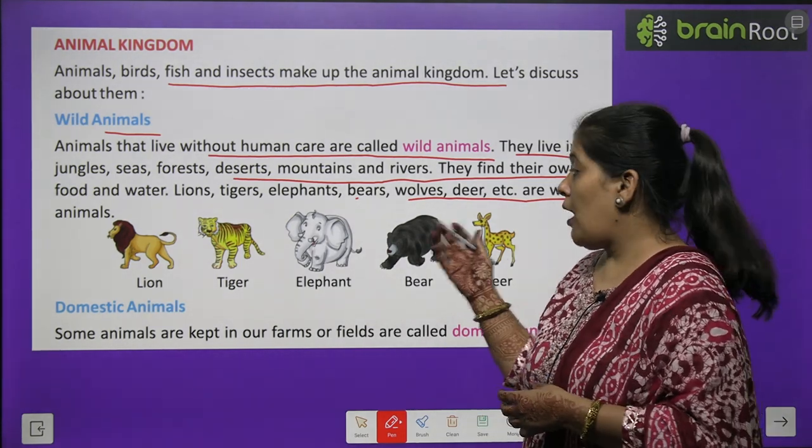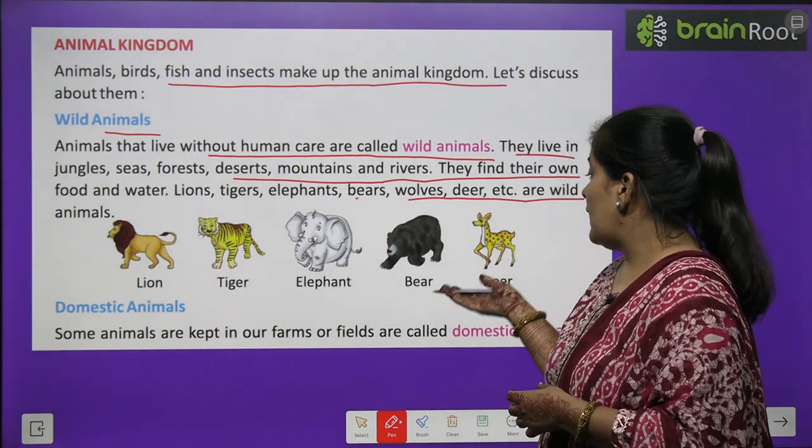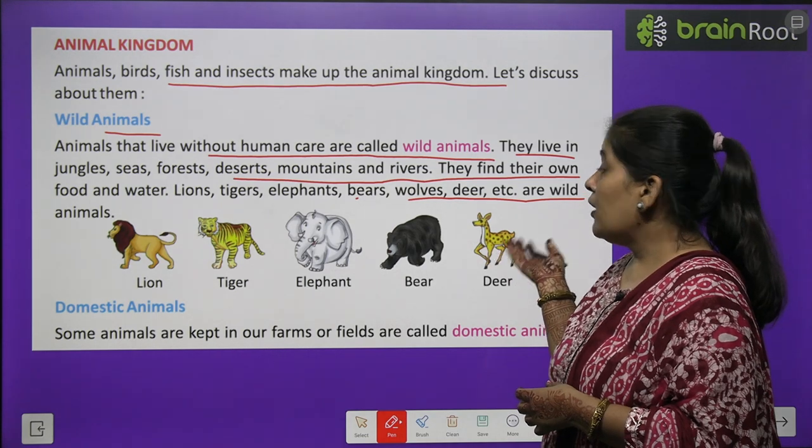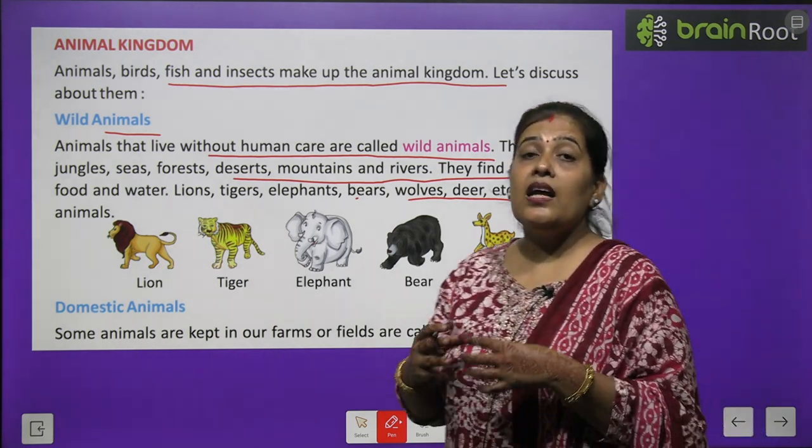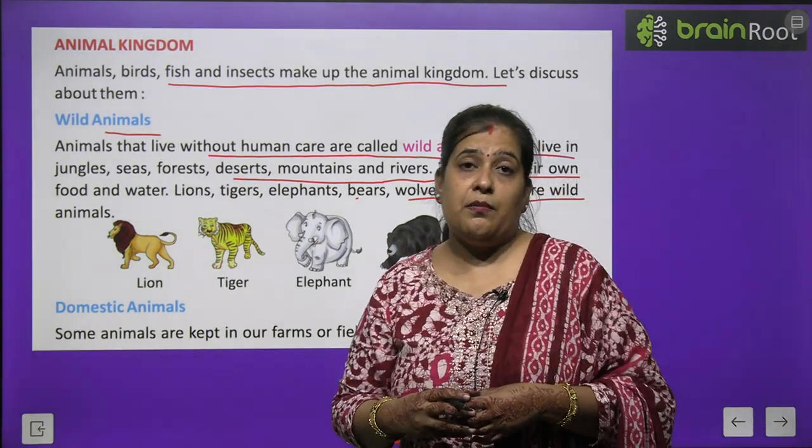Sher, cheetah, bhaloo, hathi, or hiran — all these animals are wild animals. (शेर, चीता, भालू, हाथी और हिरण — ये सब जंगली जानवर हैं।)